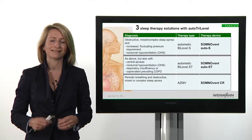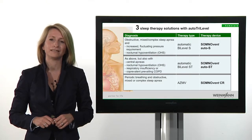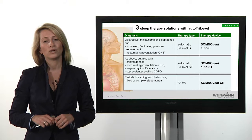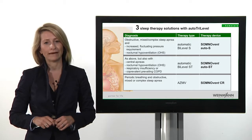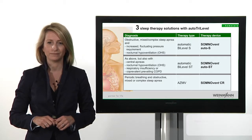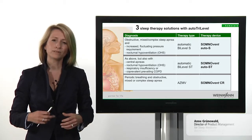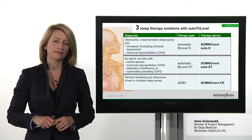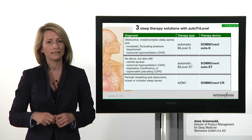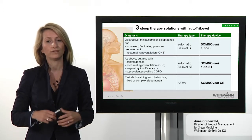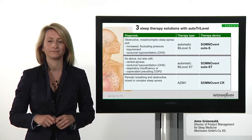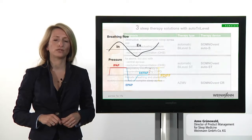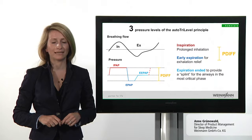The auto-tri-level principle lies at the core of the automatic bi-level devices, Somnivend Auto-S and Auto-ST, as well as the Somnivend CR for cardiorespiratory therapy. The basic principle is the same, however the exact method of regulation differs slightly according to the different indications and what's required of the devices.